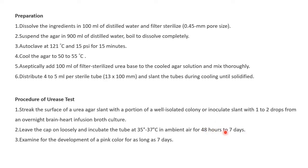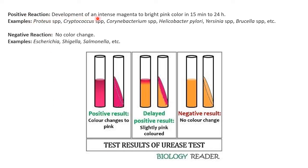Incubation can extend to a maximum of 7 days depending on the culture. If the culture is rapid urease-positive, you will get results within 48 hours; if it is weakly positive, it may take several days. Examine for the development of pink color up to 7 days. A positive reaction is the development of intense magenta to bright pink color within 24–48 hours — examples include Proteus, Cryptococcus, Corynebacterium, Helicobacter pylori, Yersinia, and Brucella species. Negative reaction — no color change — is given by Escherichia, Shigella, and Salmonella. A slightly pink color only on the surface indicates a weakly or delayed positive reaction.